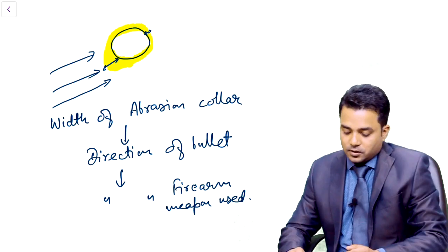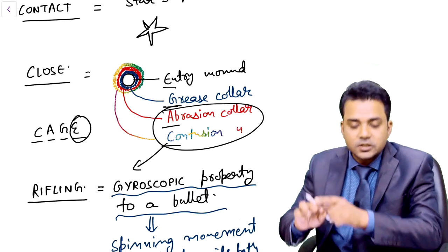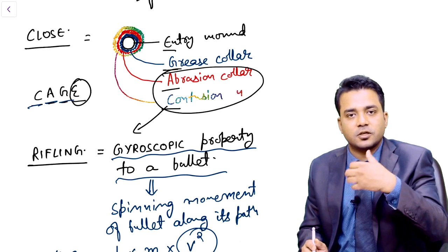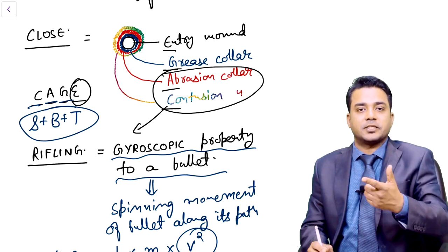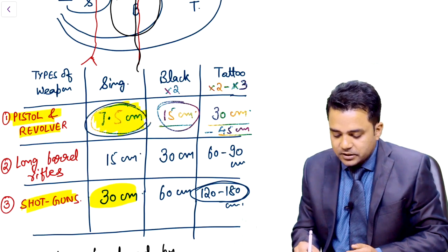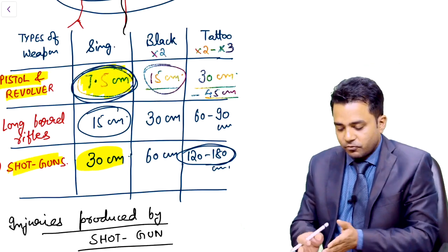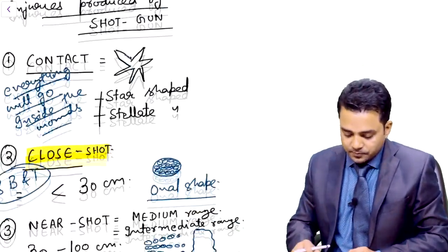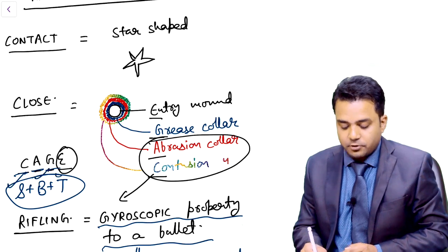In close rifled wounds, along with the CAGE entry wound pattern — contusion collar, abrasion collar, grease collar, and entry wound — you will also have singeing, blackening, and tattooing. In the AIIMS question, if singeing, blackening, and tattooing are all present, the answer is close shot. For pistol and revolver, the singeing distance is 7.5 cm. For long barrel rifled weapons it is 15 cm — just double 7.5. Just remember 7.5 cm and everything will be crystal clear.